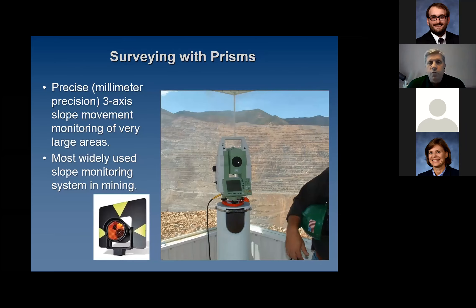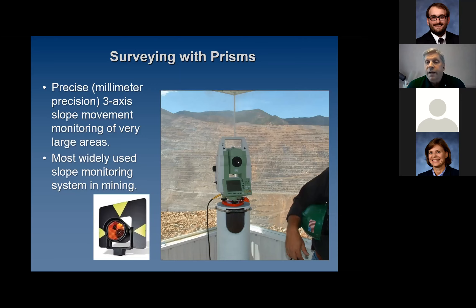Even more sophisticated is surveying with prisms — very precise. It's probably the most commonly and widely used slope monitoring method in mining. You can place as many prisms as you think you need on your slopes, and it can be monitored 24 hours a day, seven days a week in most weather conditions. Heavy snow, heavy rain, or fog may create some problems, but it's a very economical method. One problem is that once you start to have movement on your slope, it may be too hazardous for people to place additional prisms — but this is a good method if you have an area where you might expect problems to occur.